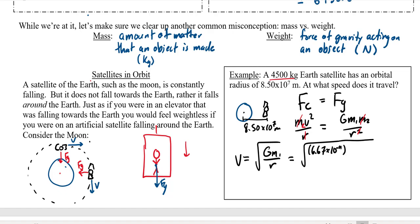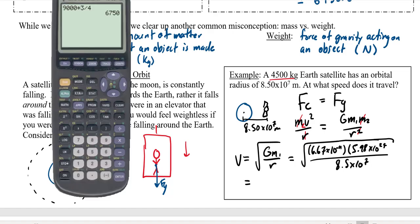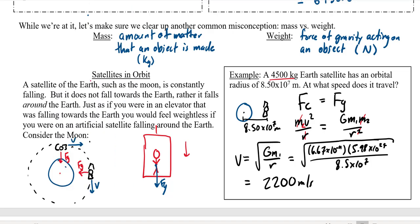So if I crunch these numbers here, 6.67 times 10 to the negative 11—now the mass of the planet is a given, it's on your formula sheet, so that's 5.98 times 10 to the 24—and then in this case the r value is 8.5 times 10 to the 7. So let's just plug that in and see what we get. Okay, 6.67 e negative 11 times 5.98 e 24 divided by 8.5 e 7, and don't forget that I have to take the square root of this whole thing here in order to get my answer. And so I get 2166, right around 2200 meters per second, which is just over two kilometers a second. So they have to move them pretty quick.